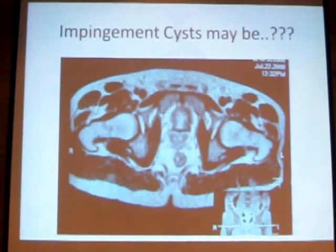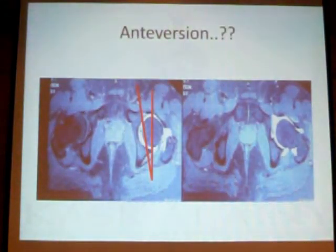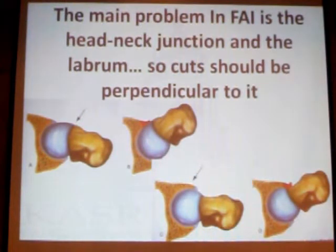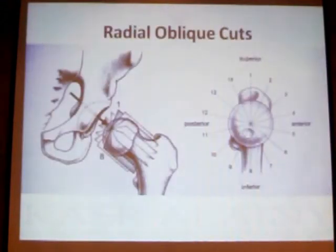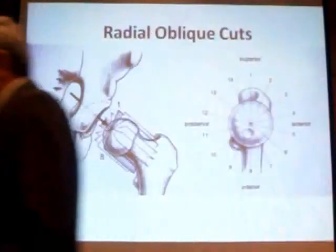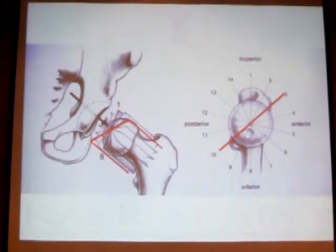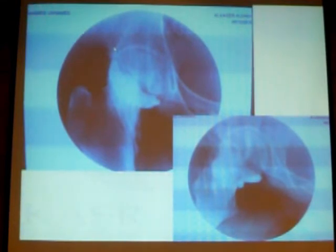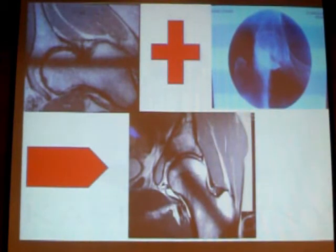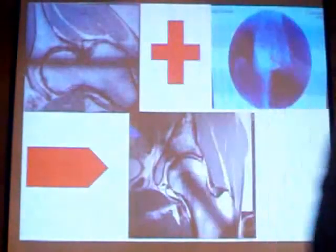Maybe we can detect on a normal axial sequence impingement cysts, which are due to the abutment of the head and neck junction with the acetabulum, or maybe you can detect over-coverage by calculating acetabular anteversion. But the main problem with femoro-acetabular impingement is the head and neck junction and the labrum. So the cuts should be perpendicular to the head and neck junction and the labrum. The basic sequence is the radial oblique sequence — it takes an axis around a point connecting the center of the head and the center of the neck, turning 360 degrees around the head and neck junction. We combine it with an injection, injecting gadolinium inside the hip, so that we have a good view of the hip and fill in the gaps in the labrum to better see the labrum and the intra-articular morphology.